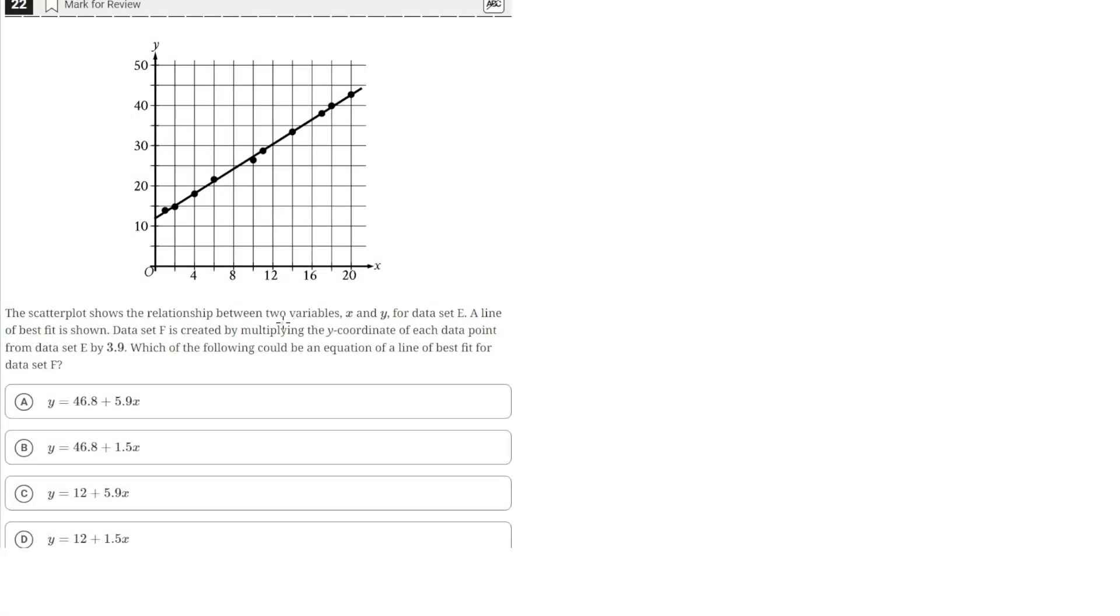The scatter plot shows a relationship between two variables, X and Y, for data set E. A line of best fit is shown. Data set F is created by multiplying the Y coordinate of each data point from data set E by 3.9. Which of the following could be an equation of a line of best fit for data set F?